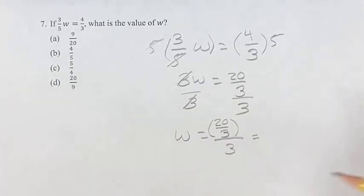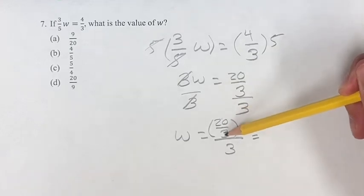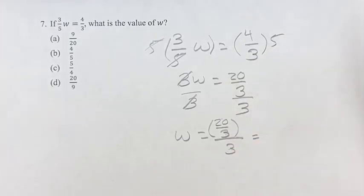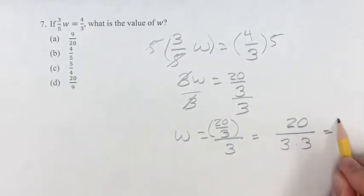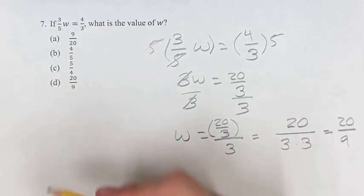And when you have one number divided by another number, divided by another number, you can stick both of those in one fraction where we have three times three. And then the numerator stays the same. And this is going to give you 20 over three times three is nine. So what is the value of w? 20 over nine.